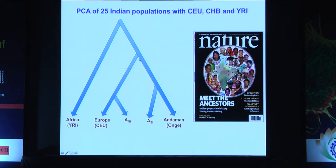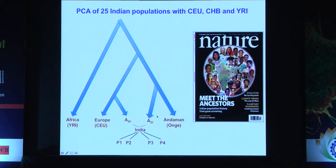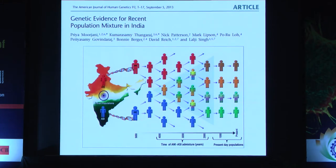The second wave brought people from Africa, and there was some divergence: one group went to Europe and the other came down to the northern part of India, whom we call Ancestral North Indians. These two groups admixed some time ago, giving rise to many population groups. Both ASI and ANI admixed during the last 4,000 to 2,000 years.